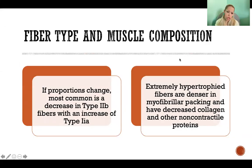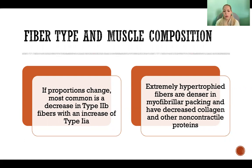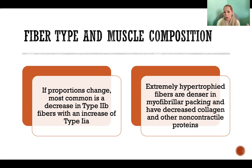Regarding fiber type and muscle composition: if the proportions change of fiber types within a muscle, the most common change would be a decrease in type 2B fibers and an increase in type 2A fibers. The proportions don't always change, but if they do, that's the direction they would go. Type 2B fibers would increase in proportion with inactivity — so less activity and less activation would change our proportions in the direction of type 2B fibers.